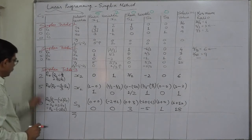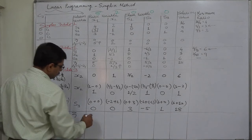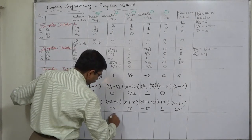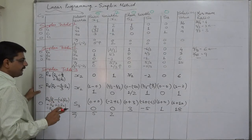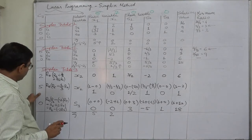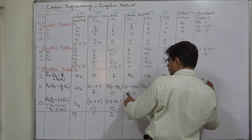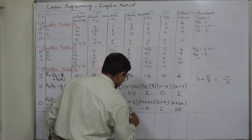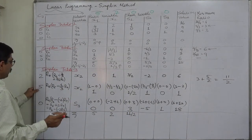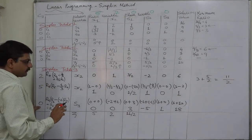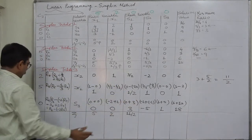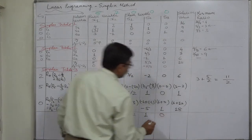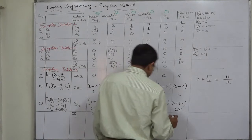Now we can write the Zj values. For the first column: 2×0 + 5×1 + 0×0 = 5. For the next column: 2×(3/2) + 5×(1/2) + 0×3 = 3 + 5/2 = 11/2. Next: 2×(−2) + 5×1 + 0×(−5) = −4 + 5 = 1. Then: 2×0 + 5×0 + 0×1 = 0. And for the solution column: 2×6 + 5×1 + 0×18 = 12 + 5 = 17.